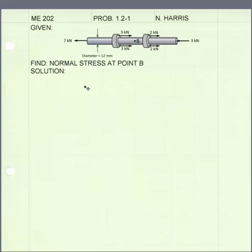I've set up my paper, labeled it with the given information, which is all the information that was in the problem. Find the normal stress at point B, and now we write our solution.